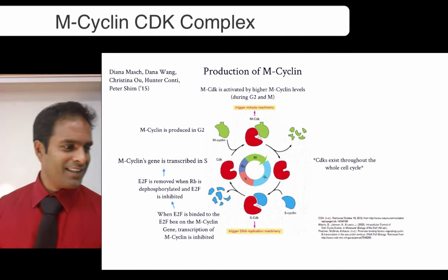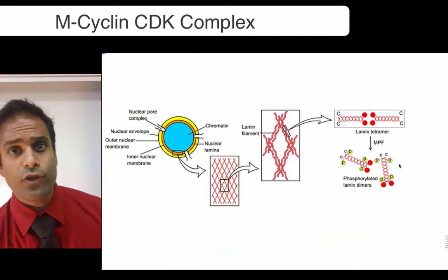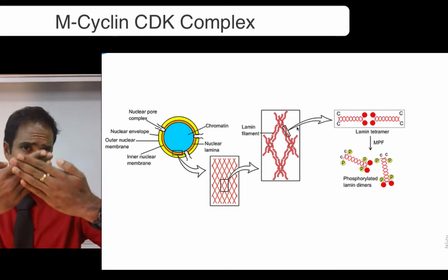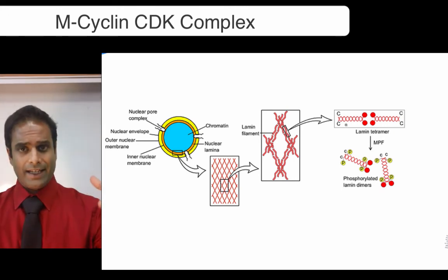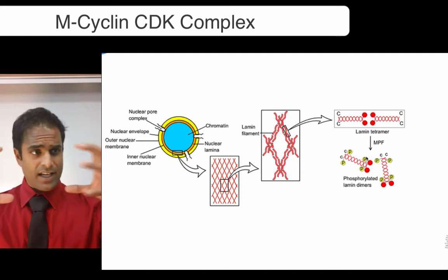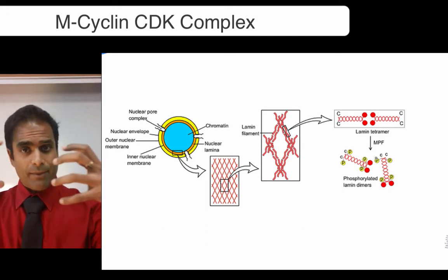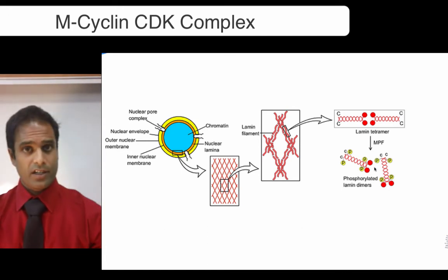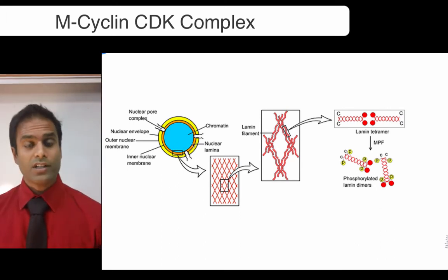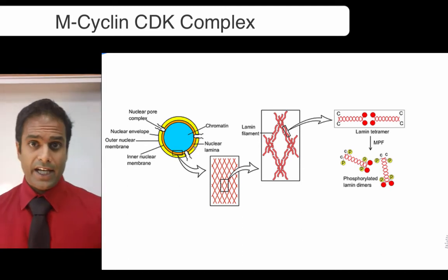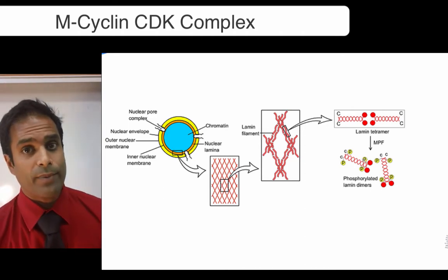One of the first things the m cyclin CDK complex does is phosphorylate lamins. If you imagine a protein with two ends stuck together by charge interactions — if you put two phosphate groups on those ends, they are negatively charged and the lamins will no longer bind together. The lamins, which surround the DNA and hold up the nuclear envelope, will begin to fall apart. So when MPF phosphorylates the lamins, they come apart, which is how the nuclear envelope starts to break down.